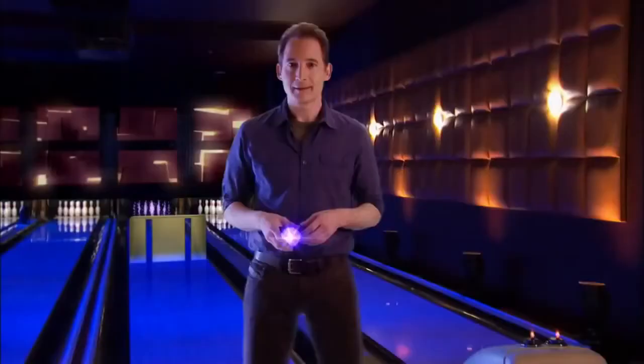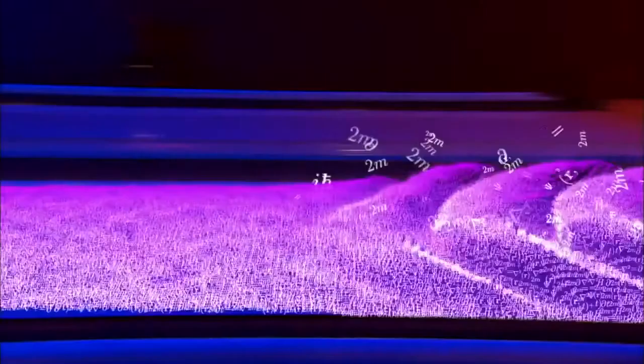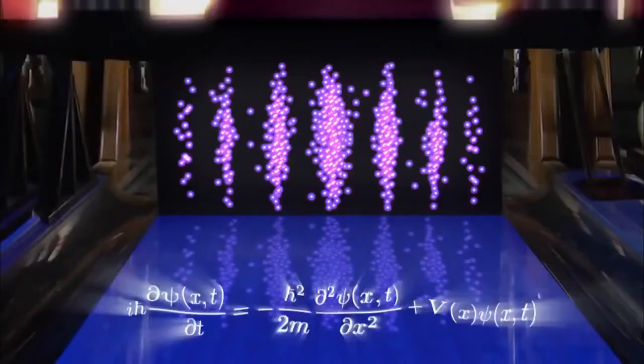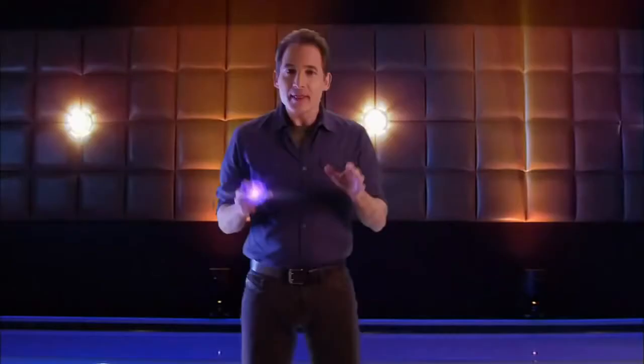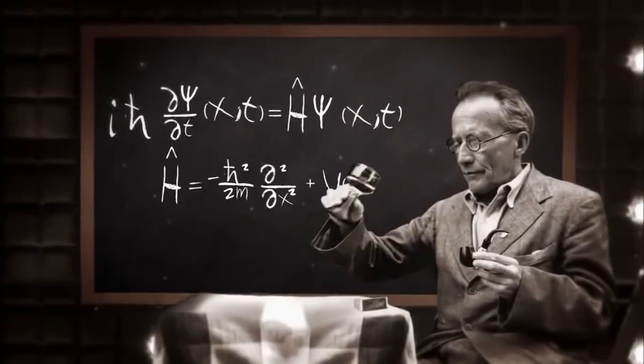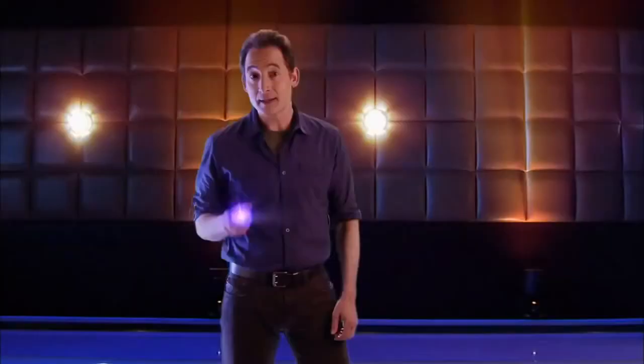As weird as it sounds, this new way of describing how particles like electrons move is actually right. When I throw a single electron, I can never predict where it will land. But if I use Schrödinger's equation to find the electron's probability wave, I can predict with great certainty that if I throw enough electrons, then 33.1% would end up here, 7.9% would end up there, and so on. These kinds of predictions have been confirmed again and again by experiments, so the equations of quantum mechanics turn out to be amazingly accurate and precise, so long as you can accept that it's all about probability.